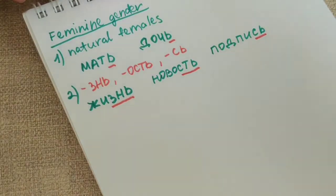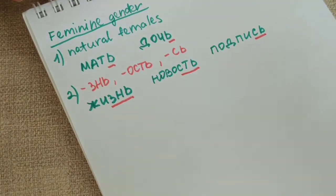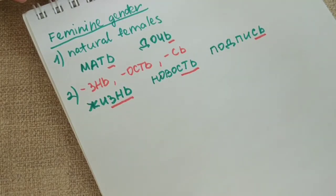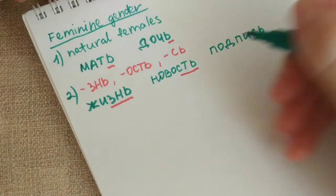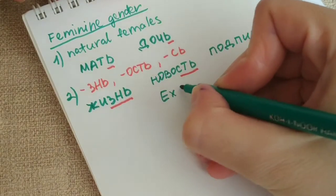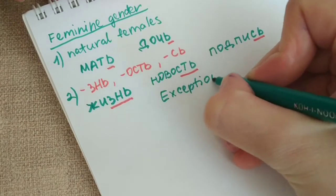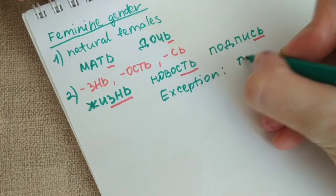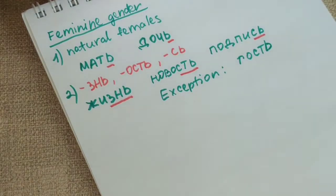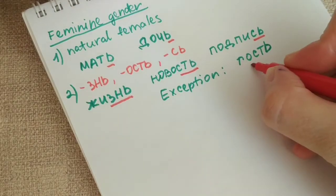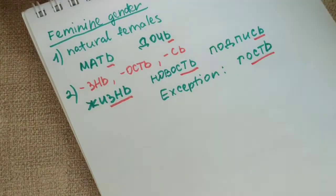You have to remember. But of course, you already know one exception to this rule that we've gone over today. It is гость — we've already learned that it is of a masculine gender, though it's ending in -ость. This is an exception that you have to know by heart.